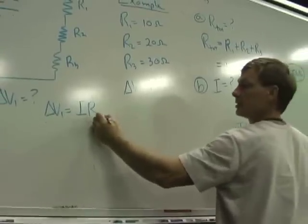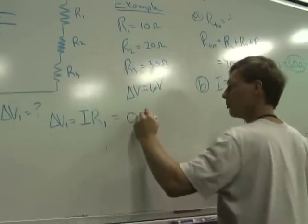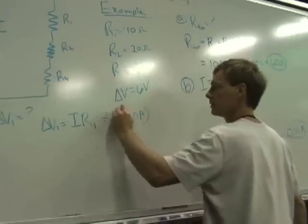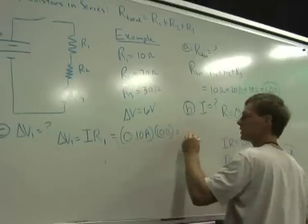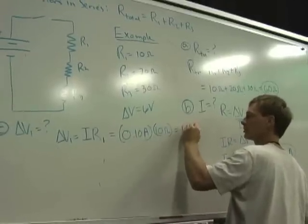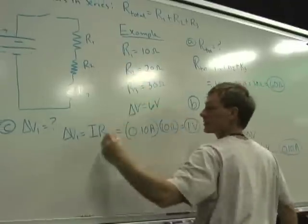And this would be the resistance of the first resistor. And so that's 0.10 amps times 10 ohms, which is one volt. So I got one volt drop across here, that first resistor.